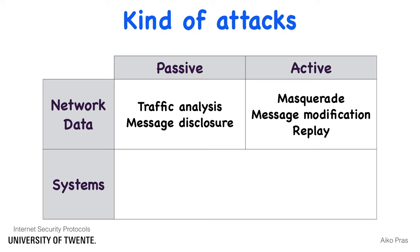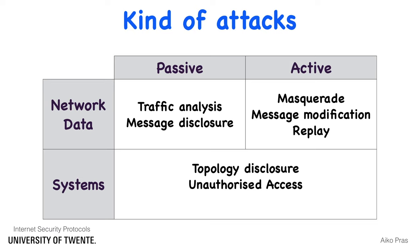For attacks on end users or network systems, we distinguish between three kinds. The first is topology disclosure, such as scanning attacks to find details of the network or connected systems. The second is unauthorized access, which starts with password attacks — for example phishing or brute force guessing — and may end with the installation of backdoors. The third is denial of service, in which attackers try to overload systems, services, or network links.